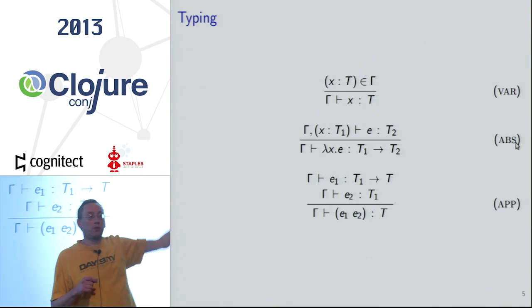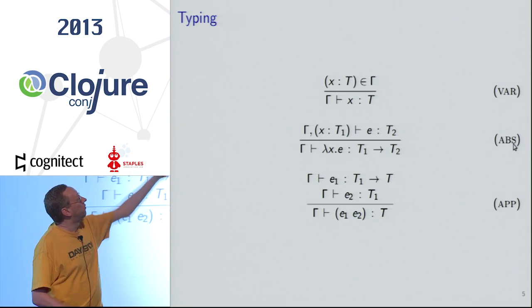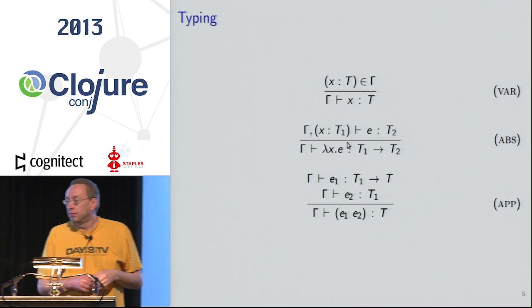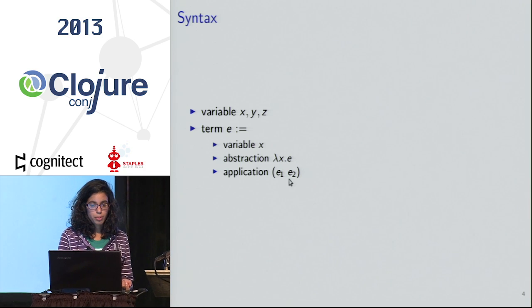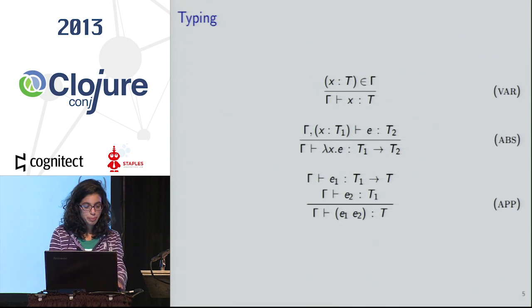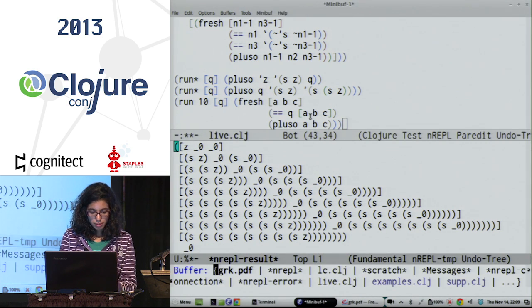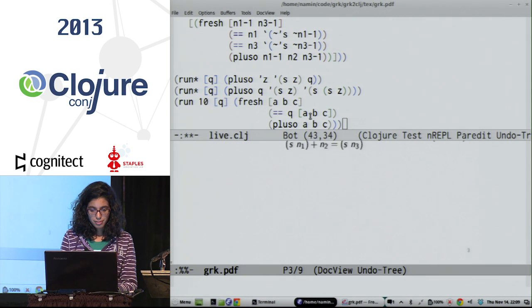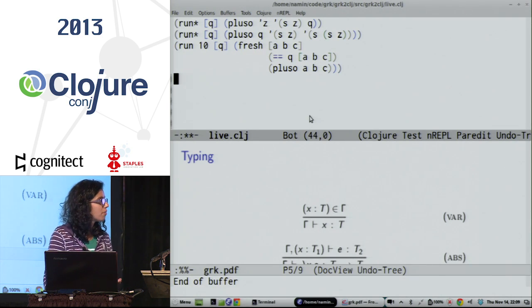Normally, we give names to all the rules, which is handy when referring to them. So ABS is abstraction, which is lambda. VAR is variable. And then APP is application. And you can think of procedure application. And in this case, there is one rule per syntax shape. In our syntax, we had three cases. So here we have three cases as well. It's usually, it can be more complicated, of course.